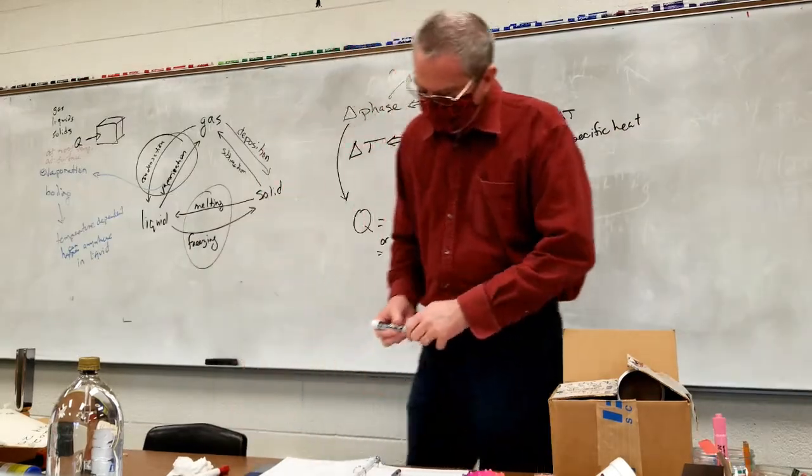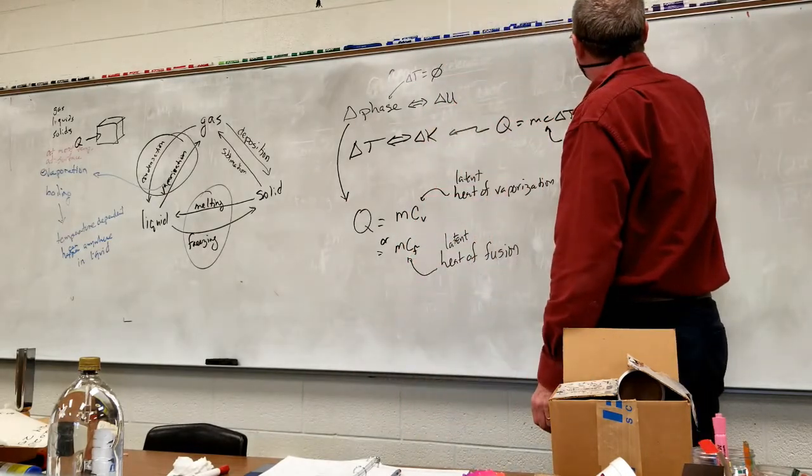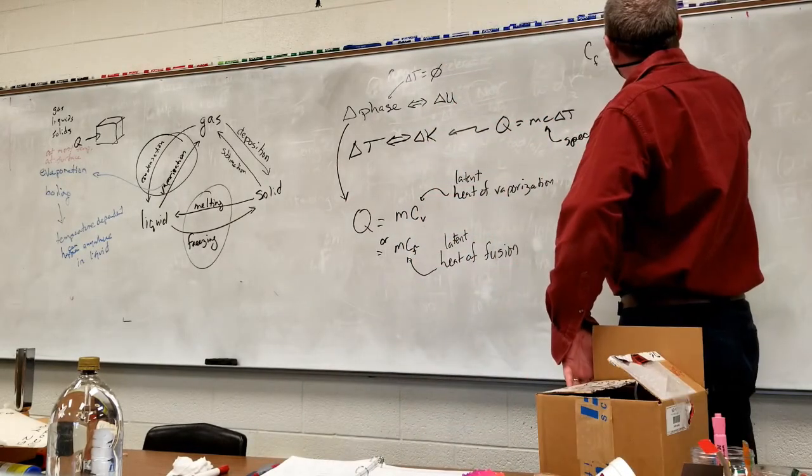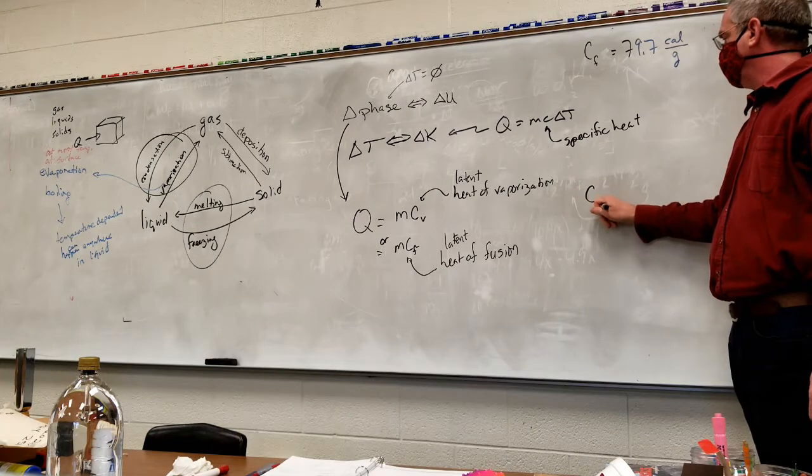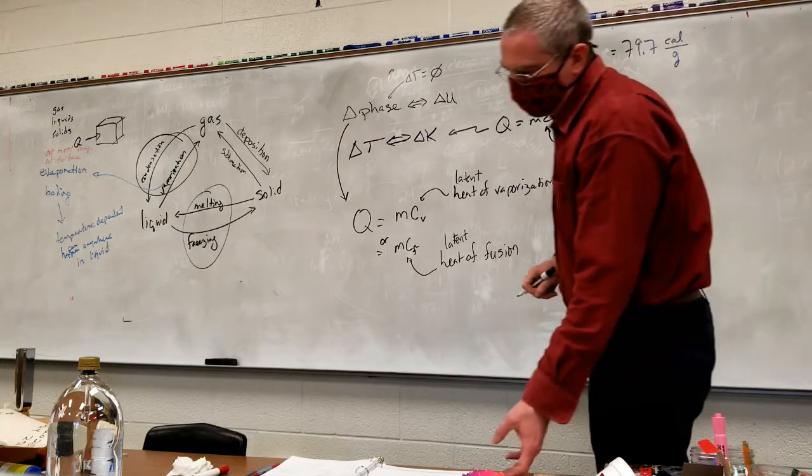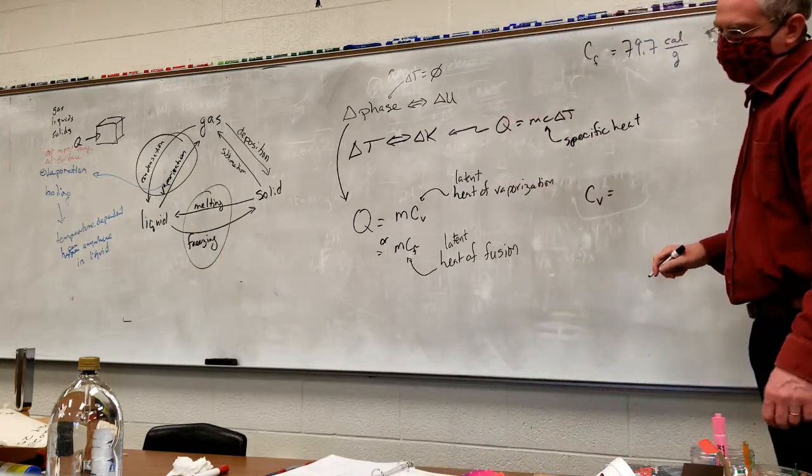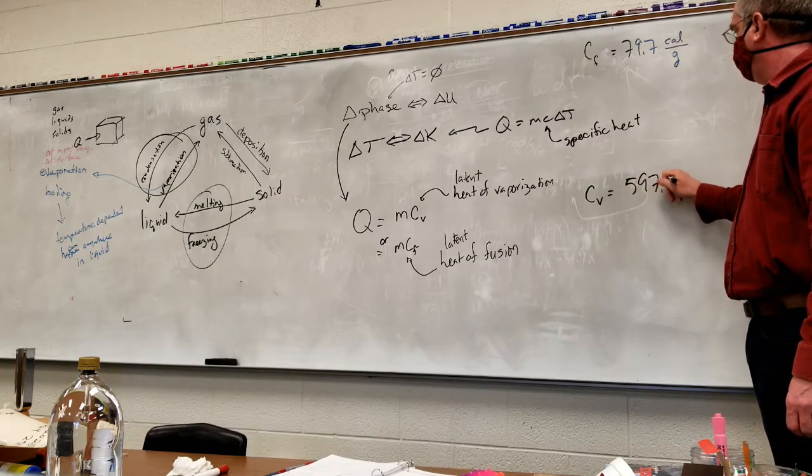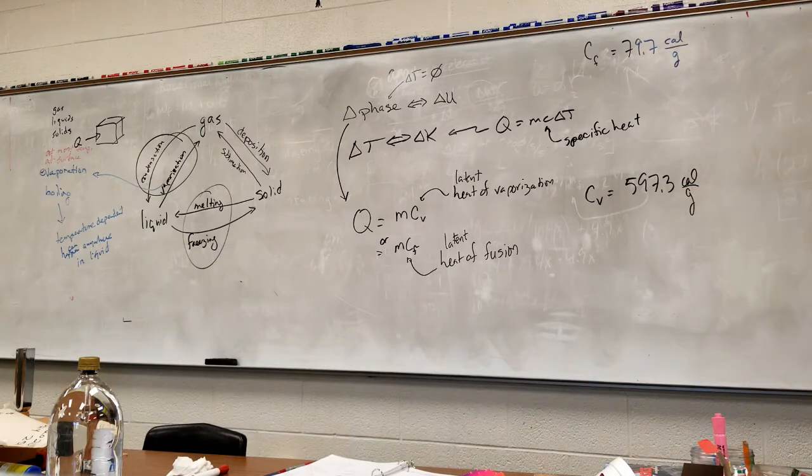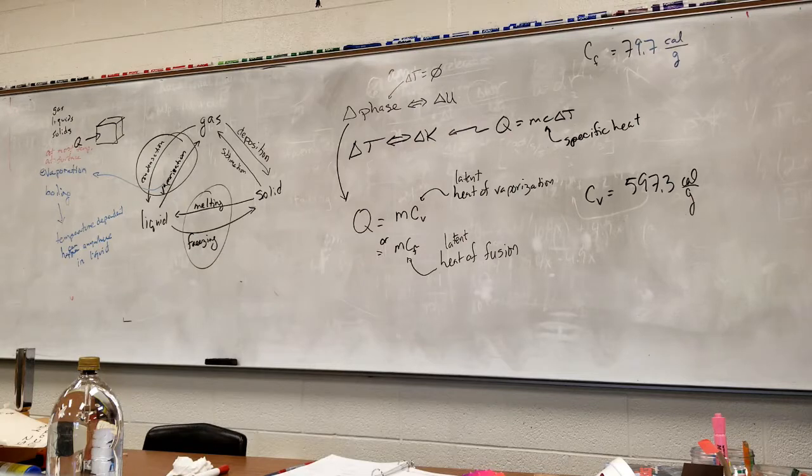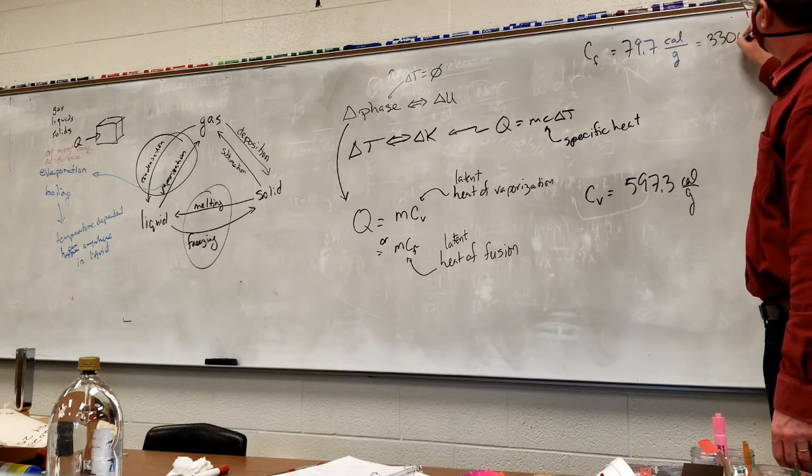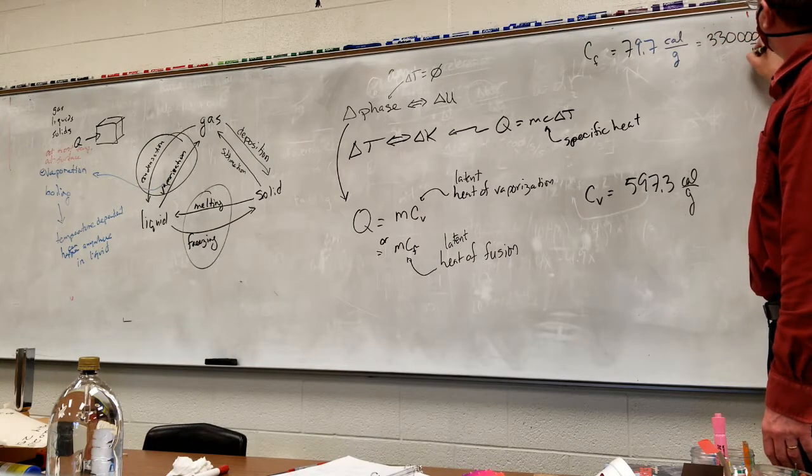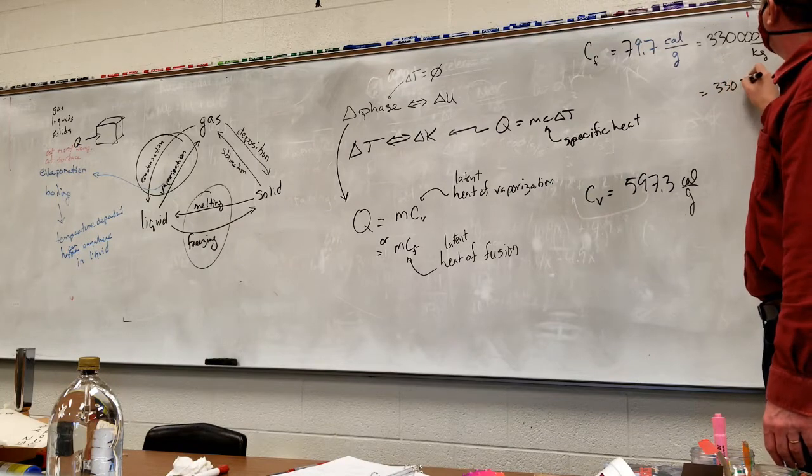To give you some idea of numbers here. So for the latent heat of fusion for water, 79.7 calories per gram. And vaporization, latent heat of vaporization for water, 597.3 calories per gram. I'm not expecting you to memorize those numbers, but just have some idea of what is a reasonable number here. The top one up here translates into 330,000 joules per kilogram, or 330 joules per gram.